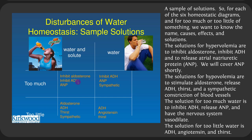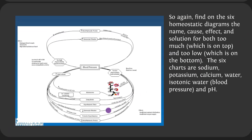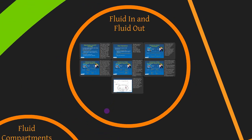For each of the six homeostatic diagrams, we want to know the name, causes, effects, and solutions. Solutions for hypervolemia include inhibiting aldosterone, inhibiting ADH, and releasing ANP. Solutions for hypovolemia include stimulating aldosterone, releasing ADH, triggering thirst, and sympathetic constriction of blood vessels to raise blood pressure. Solutions for too much water include inhibiting ADH, releasing ANP, and vasodilation. Solutions for too little water include ADH, angiotensin, and thirst.